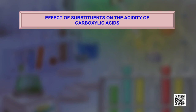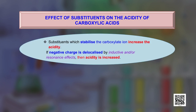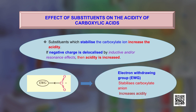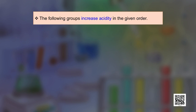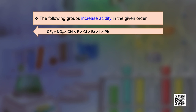Substituents that stabilize the carboxylate ion increase acidity. If the negative charge is delocalized by inductive effect, resonance effect, or both, acidity increases. Electron-withdrawing groups stabilize the carboxylate ion and increase the acidity of the carboxylic acid. Electron-donating groups destabilize the carboxylate ion and decrease acidity. The following groups increase acidity in the order: trifluoromethyl > nitro > cyano > fluorine > chlorine > bromine > iodine > phenyl.